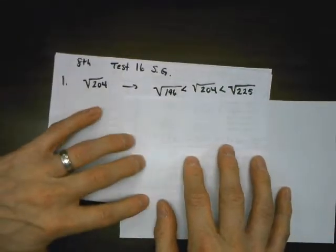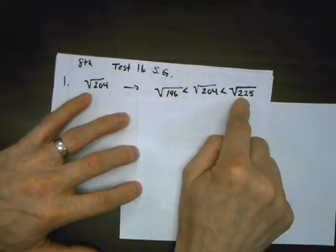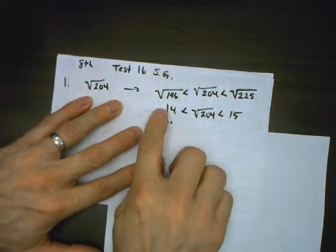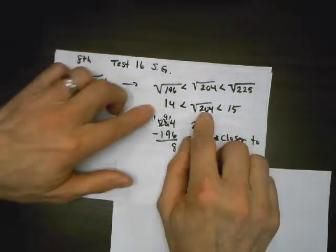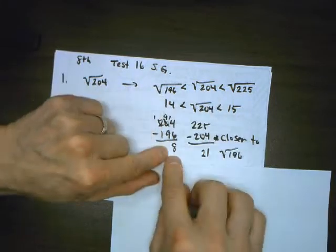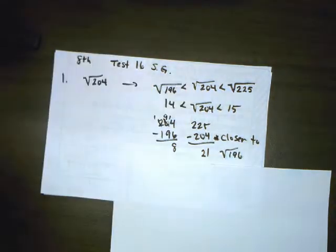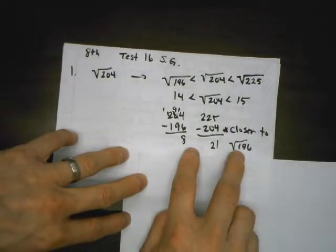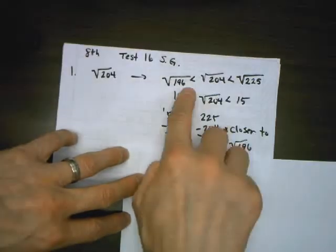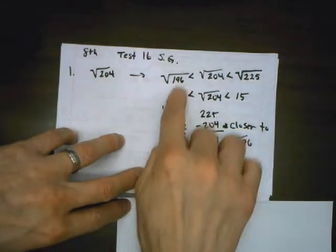204 is in between two perfect squares. 14 times 14 is 196, and 15 times 15 is 225, so it's in between 14 and 15. If I subtract 204 minus 196, I get a difference of 8. 225 minus 204 is a difference of 21. I see that this is actually closer to 196, which means it's closer to 14, so it's about 14.